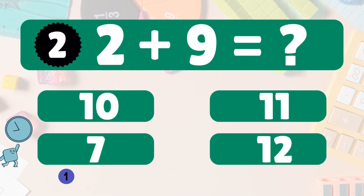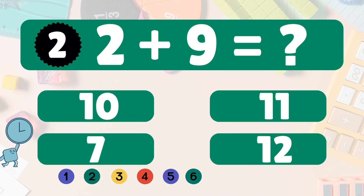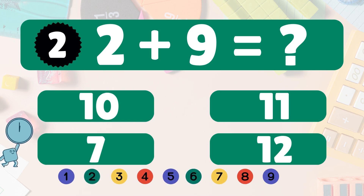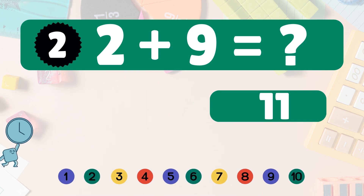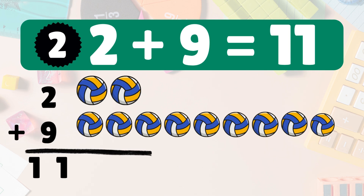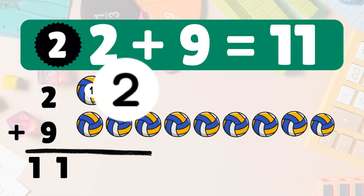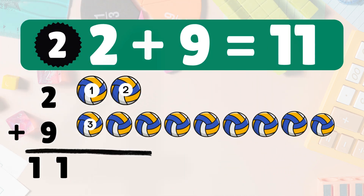2 plus 9 equals what? Think. 2 plus 9 equals 11. Let's count together. 1, 2, 3, 4.